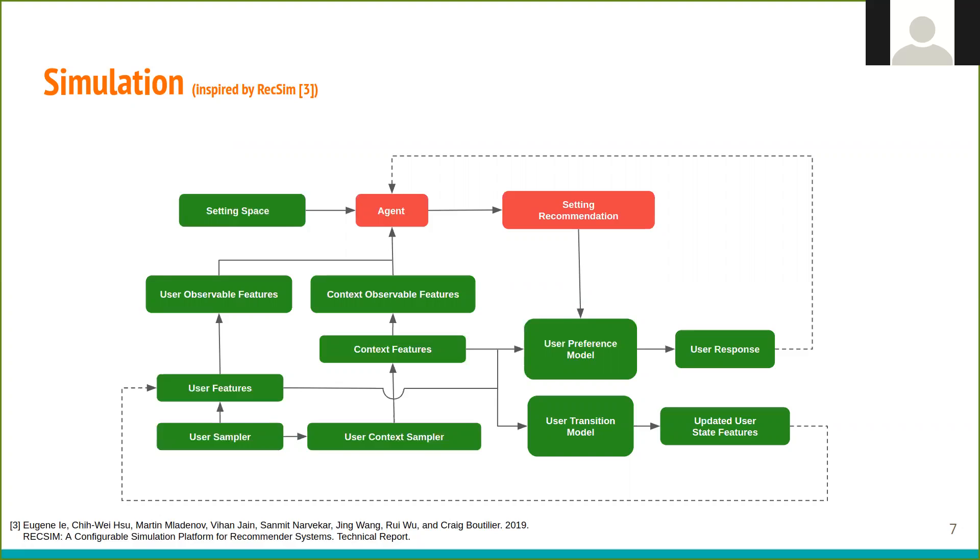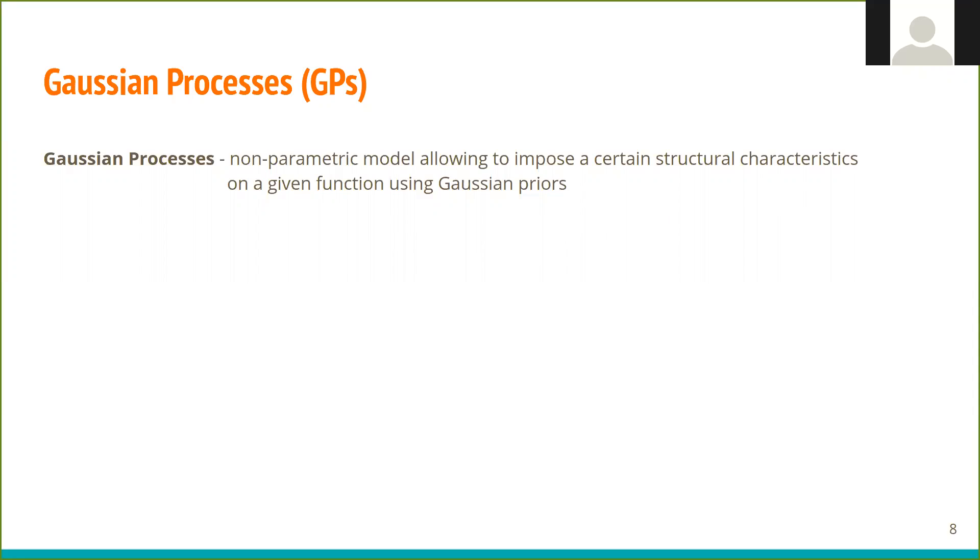As not everyone might be familiar with Gaussian processes, I will now give a quick primer. Gaussian process is a nonparametric model, allowing to impose certain structural characteristics on a given function using Gaussian priors.